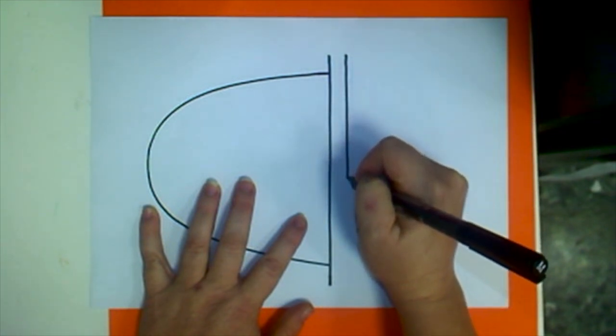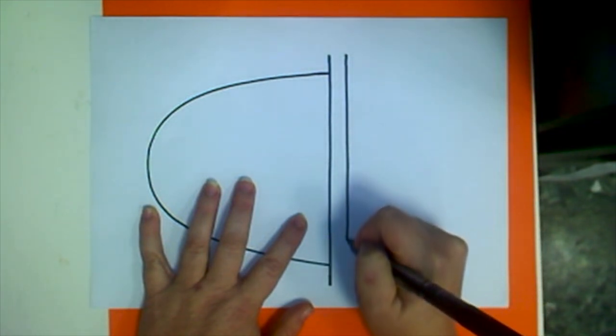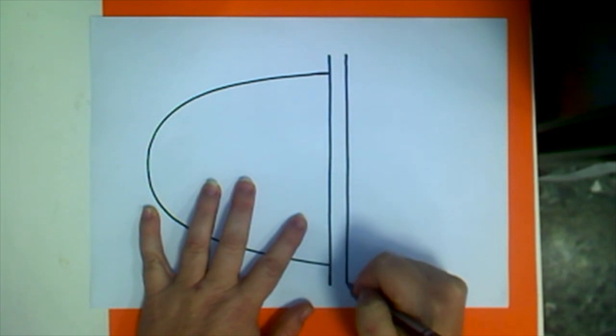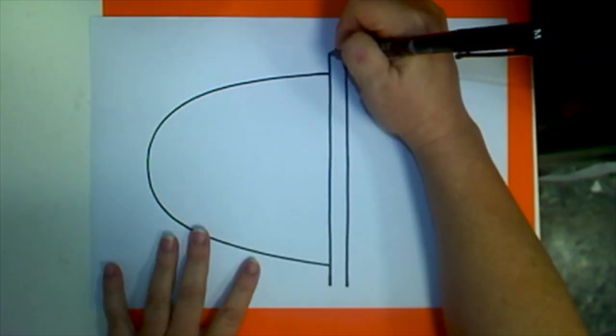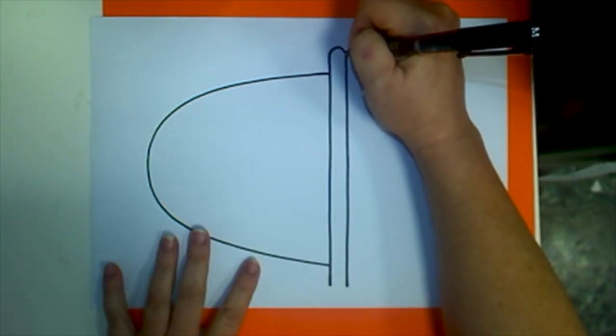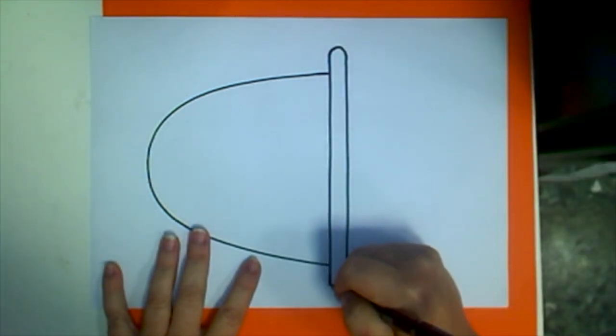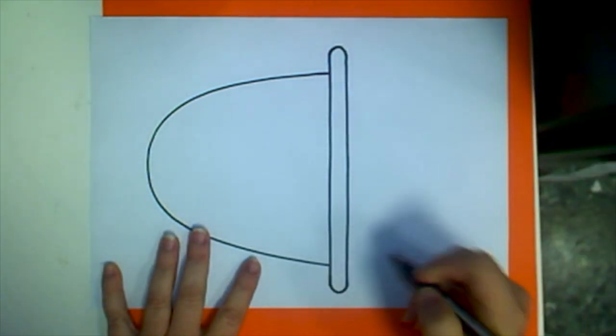That means two lines that run together but they never touch each other. Then at the top of both of these lines to connect the shapes together, we are going to draw two curved lines to complete that shape.